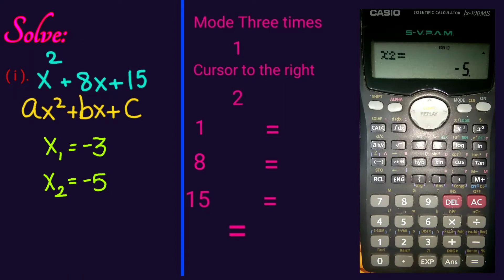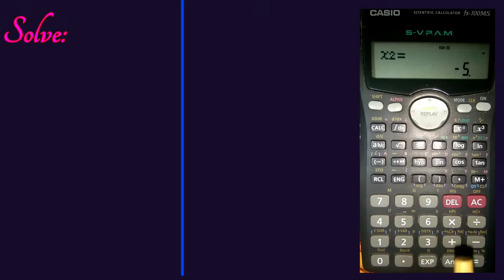Let's try one more example. Negative 2x square plus 5x minus 3. Compare this equation with ax square plus bx plus c.